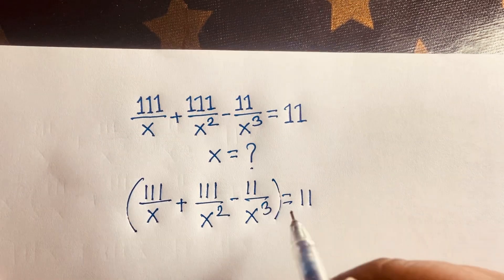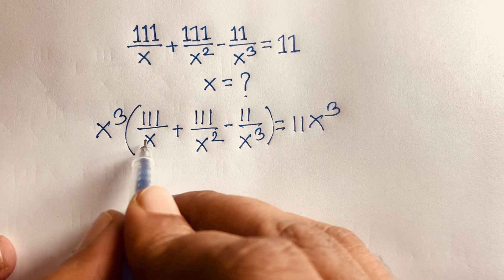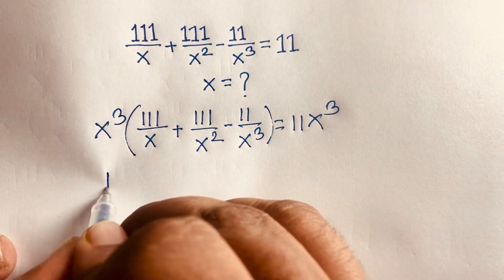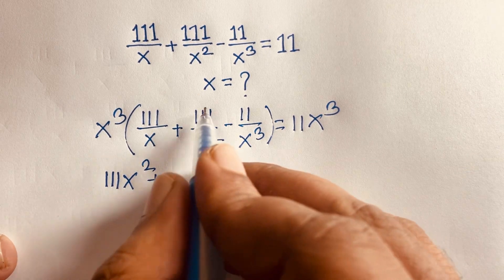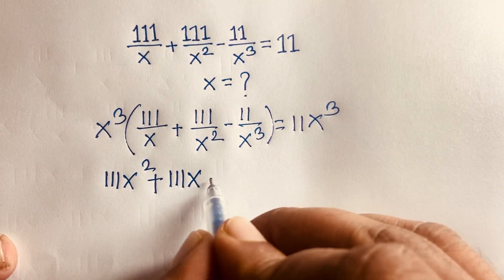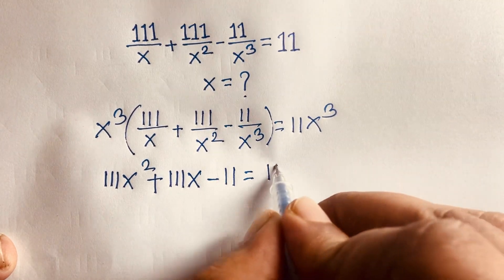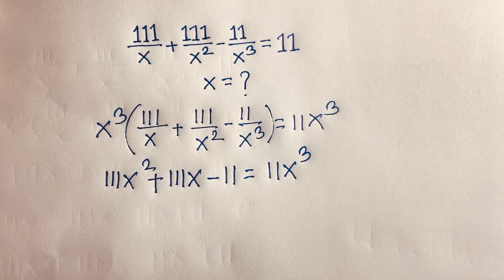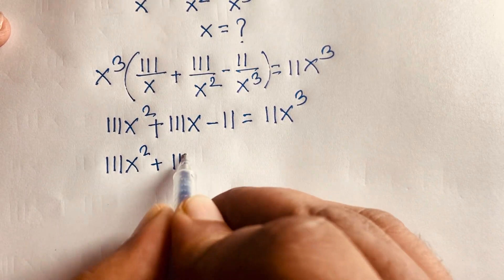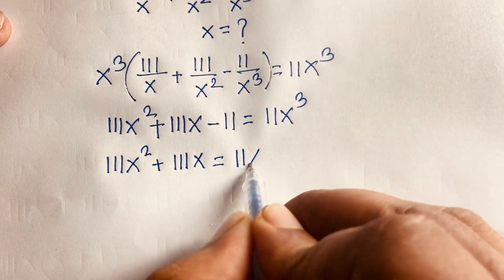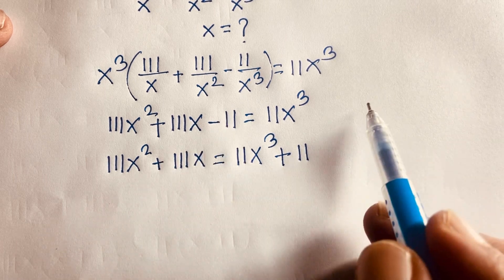I multiply both sides by x cubed. Then this equation becomes: x cubed divided by x gives x squared, so we get 111x squared. x cubed divided by x squared gives x, so we get 111x. Then minus 11 over x cubed times x cubed — the x cubed cancels — giving minus 11, equal to 11x cubed. Moving the minus 11 to the right side gives positive 11.